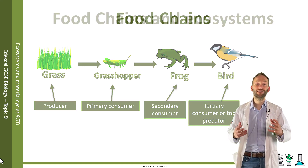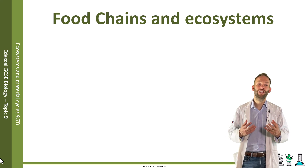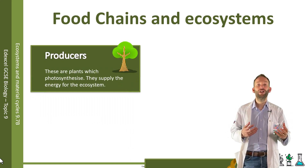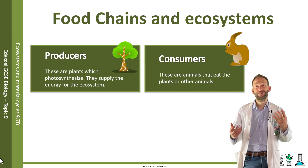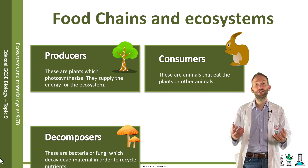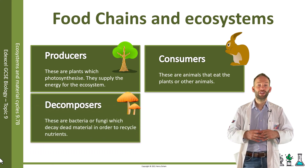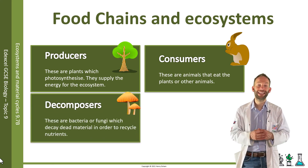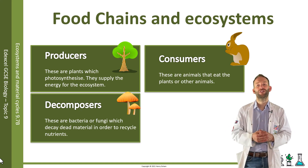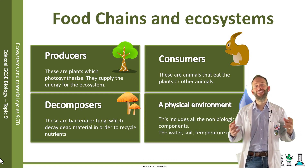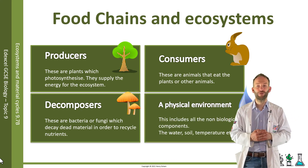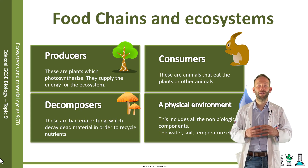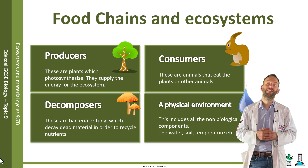In an ecosystem, you have to have certain things: producers, consumers, and also decomposers — which are bacteria or fungi that decay dead material in order to recycle nutrients. We also need our physical environment, which includes all the non-biological components: the abiotic factors.